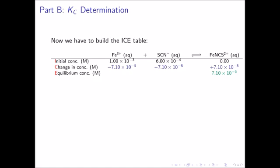To calculate the equilibrium concentration row, we take each column and perform the arithmetic. For the iron 3+ ion, we begin with 1.00 times 10 to the negative 3 molar and decrease by 7.10 times 10 to the negative 5 molar, giving an equilibrium concentration of 9.29 times 10 to the negative 4 molar. For the thiocyanate ion, we begin with 6.00 times 10 to the negative 4 molar and decrease by 7.10 times 10 to the negative 5 molar, giving an equilibrium concentration of 5.29 times 10 to the negative 4 molar.